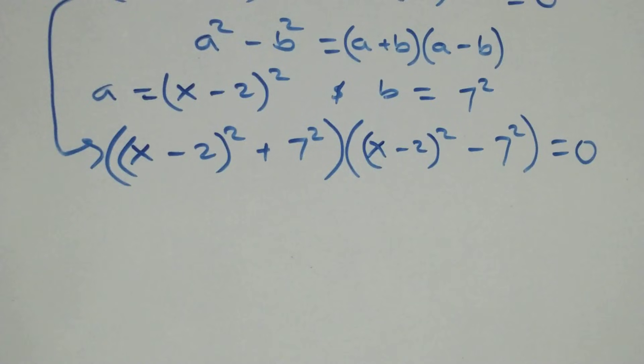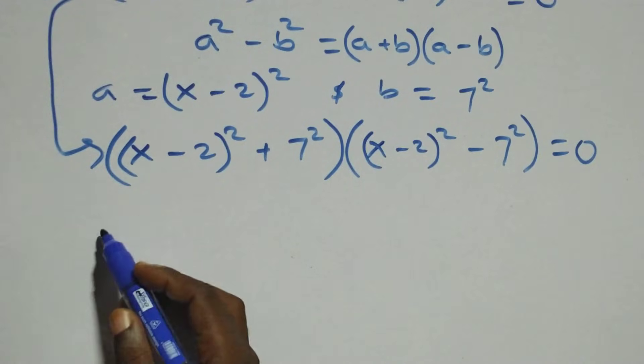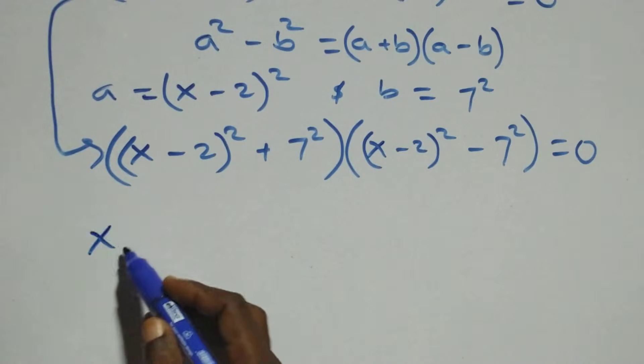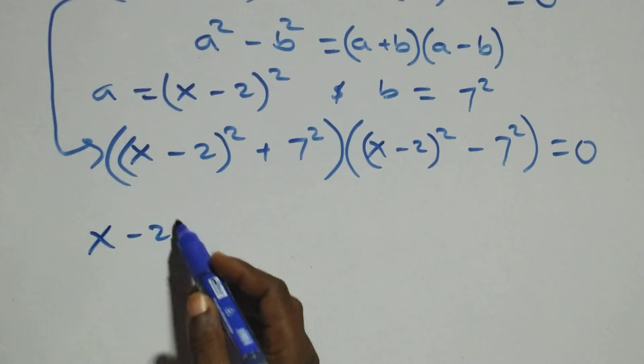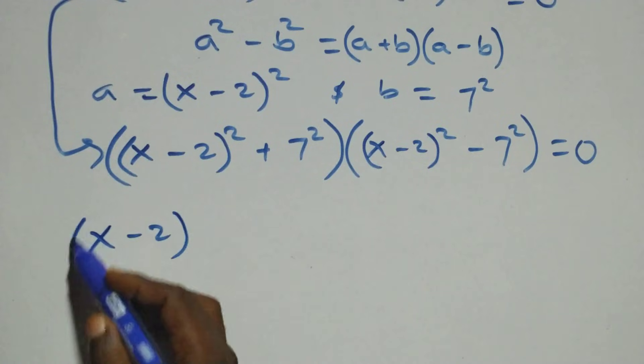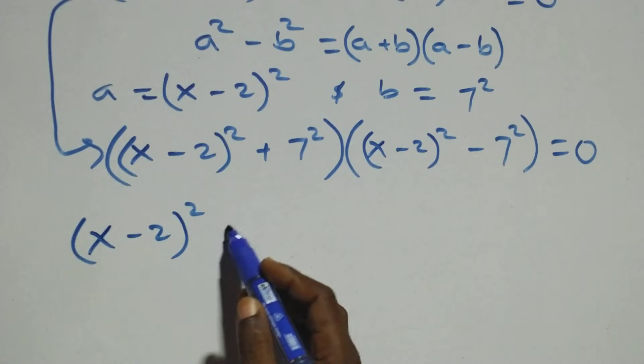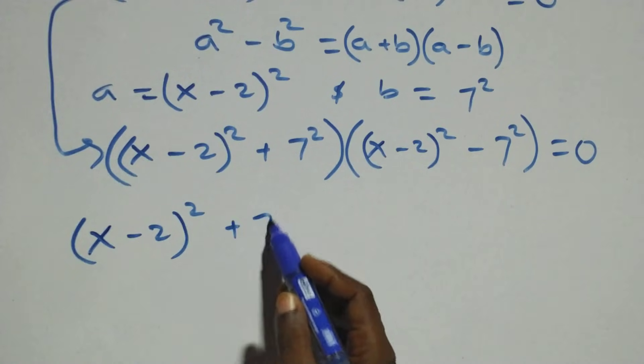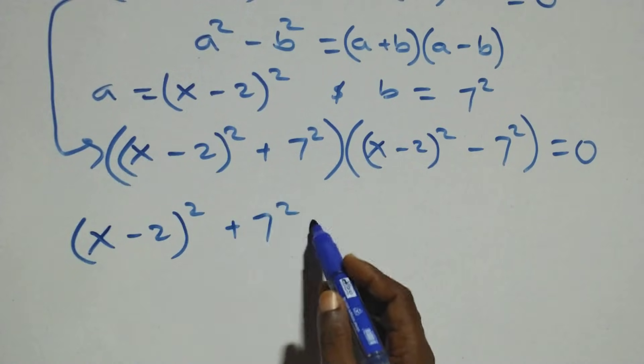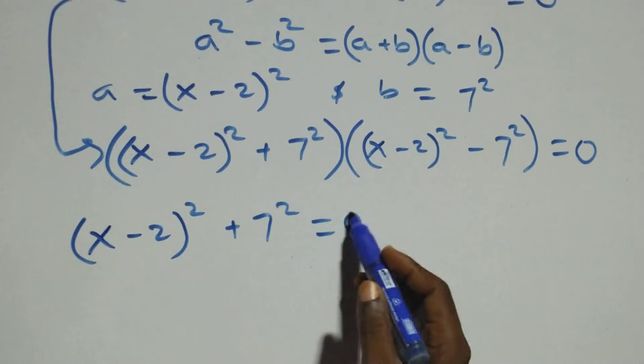From here we have two possible cases. The first case: (x minus 2) squared plus 7 squared equals zero.